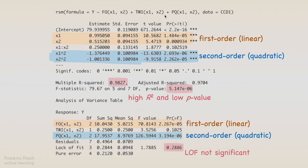Let's polish the model by removing the interaction term that was not significant. We do it by removing the TWI term from the model.